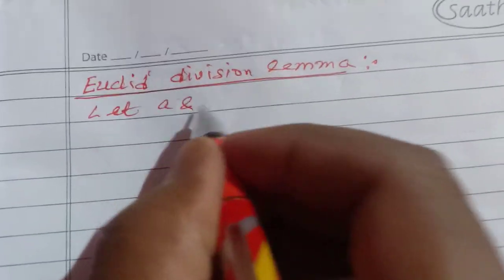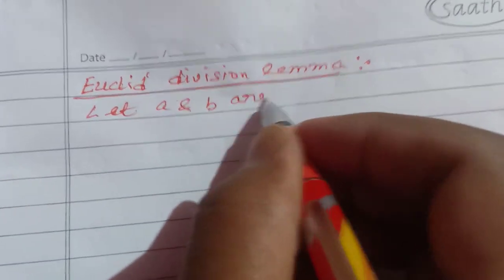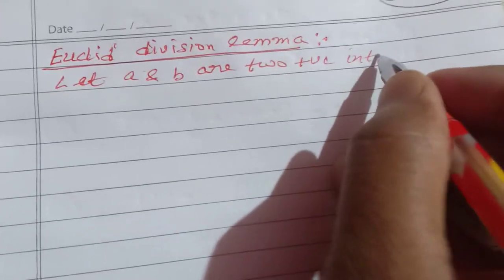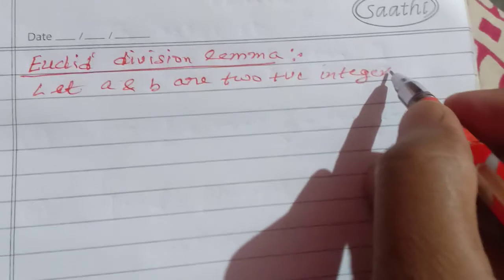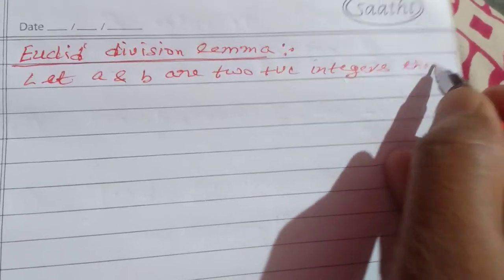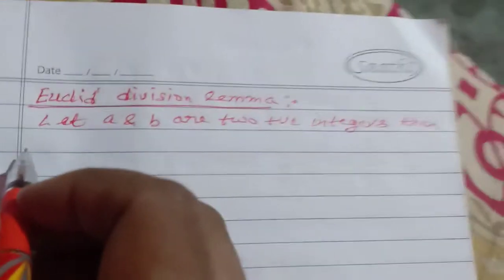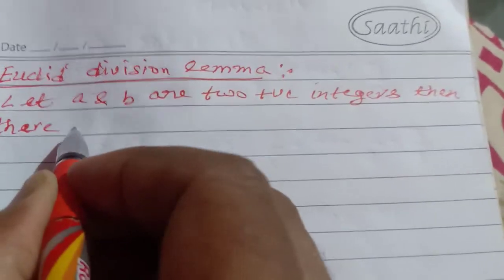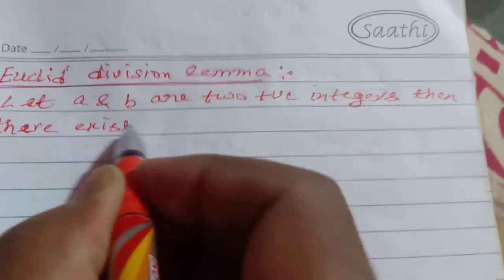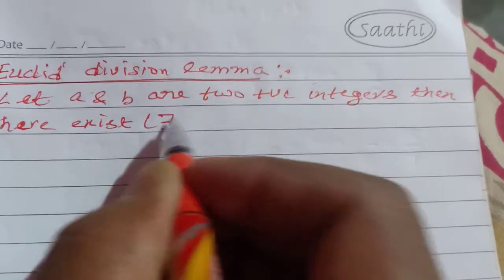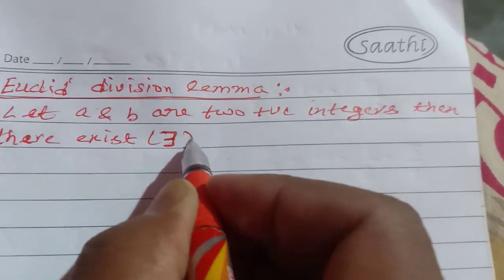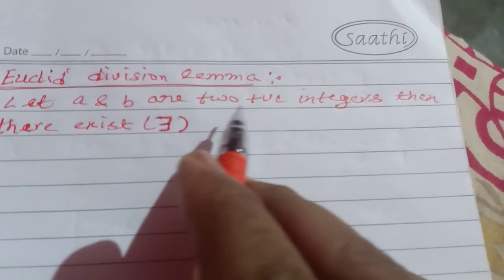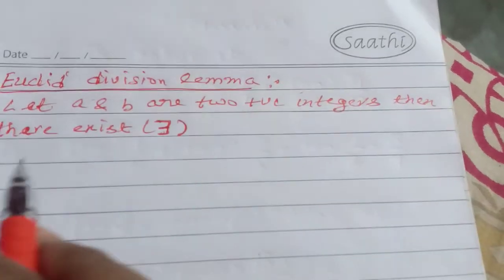Let A and B be two positive integers. Then there exist — the symbol '∃' means 'there exist' — two unique whole numbers Q and R...